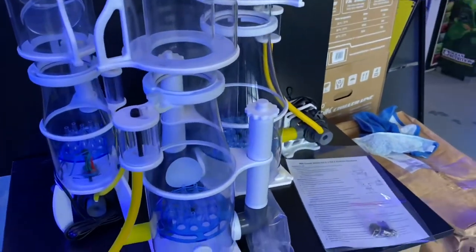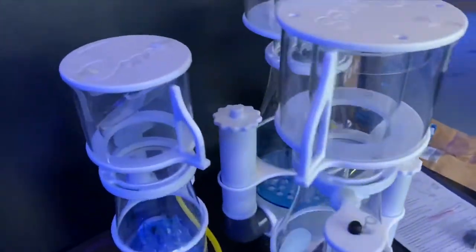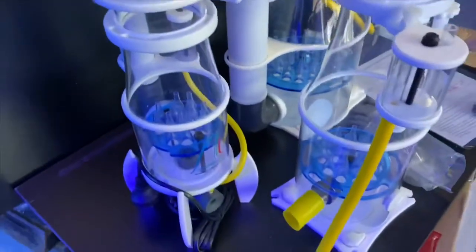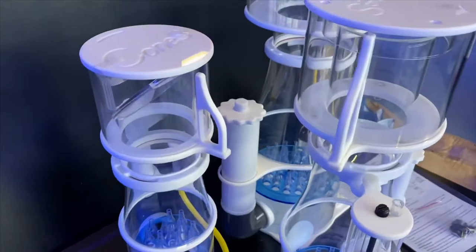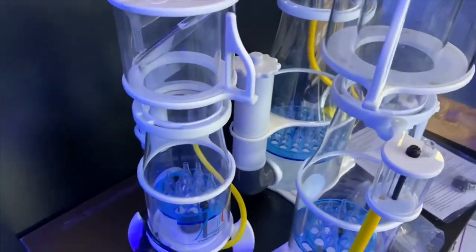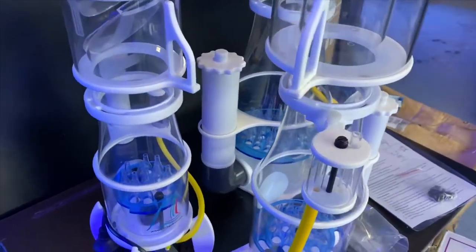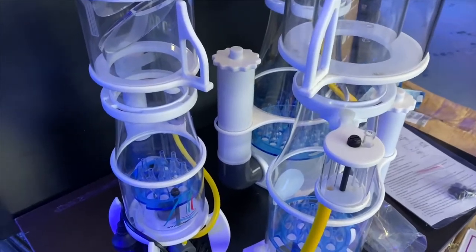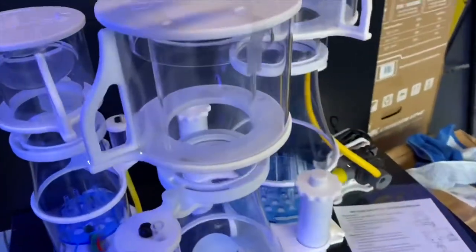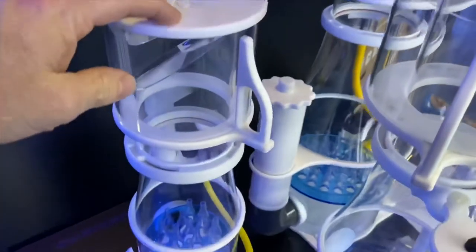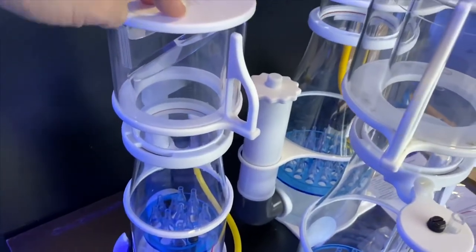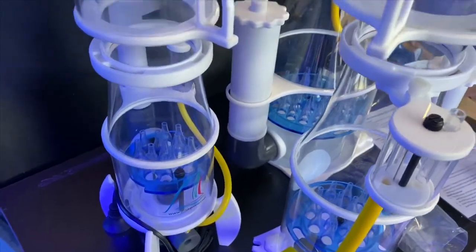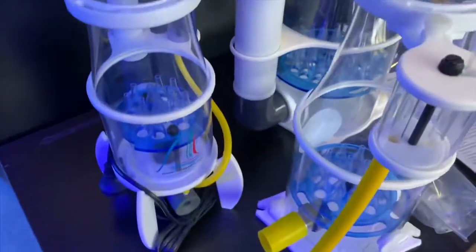This is the J&S CO range, so this is their smallest one, the CO1. It does up to about 700 liters for a really lightly stocked tank, but up to about 300 liters heavily stocked. A lot of people are using these to replace the skimmers in the Aqua 1 tanks, rightfully so. They're a good skimmer and they run Sitchi pumps.